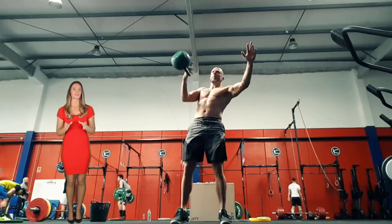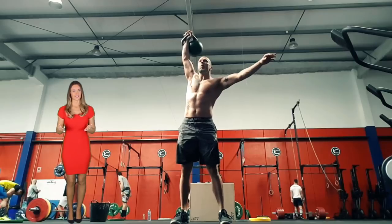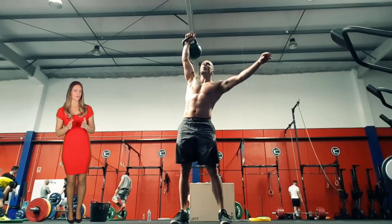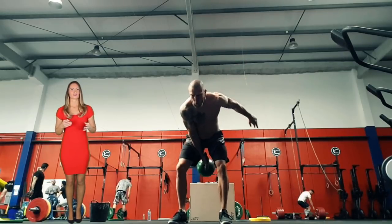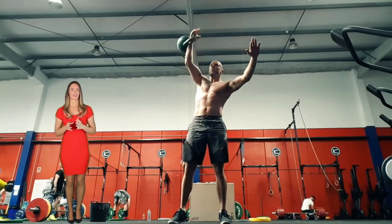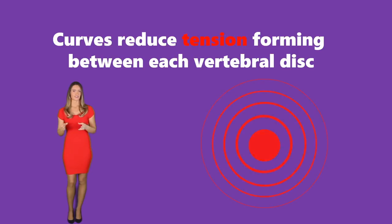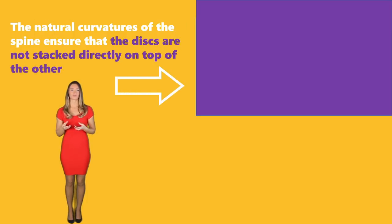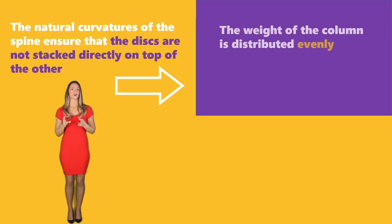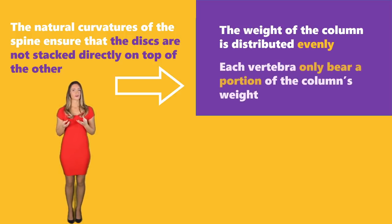Proper curvature is highly important when it comes to maintaining balance and stability, especially during dynamic movement like bending or lifting, or any movement that requires the spine to simultaneously support your weight and move along with your body. Curves also function to reduce tension forming between each vertebral disc. The natural curvatures ensure that the discs are not stacked directly on top of one another, so that the weight of the column is distributed evenly and each vertebrae bears only a portion of the column's weight.